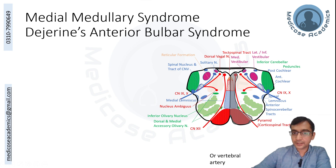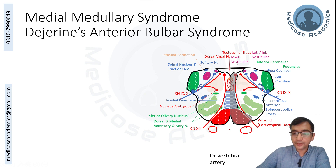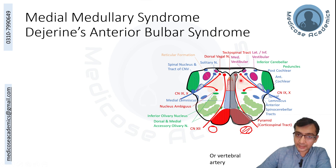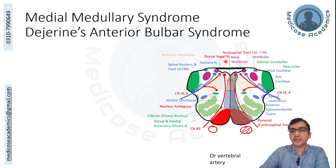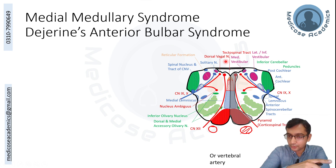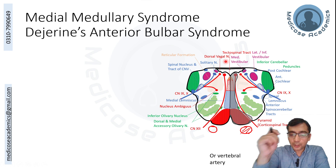Medial medullary syndrome occurs when one of the two vertebral arteries becomes blocked. The affected area is near the midline. To understand this lesion, I suggest you follow through with the lecture on the gross anatomy of the medulla oblongata and spinal cord before moving on.